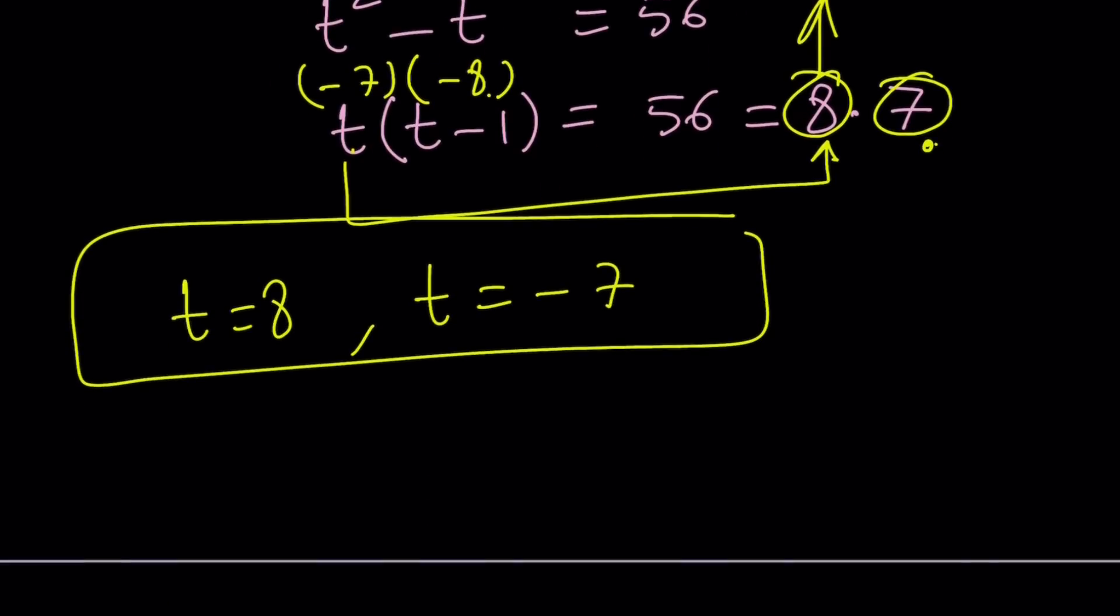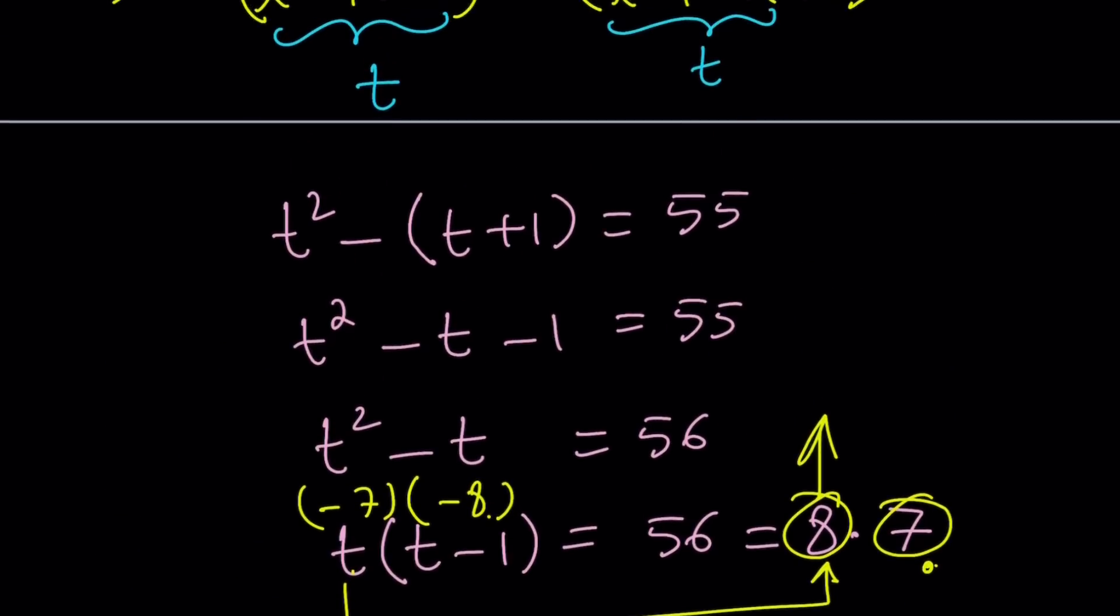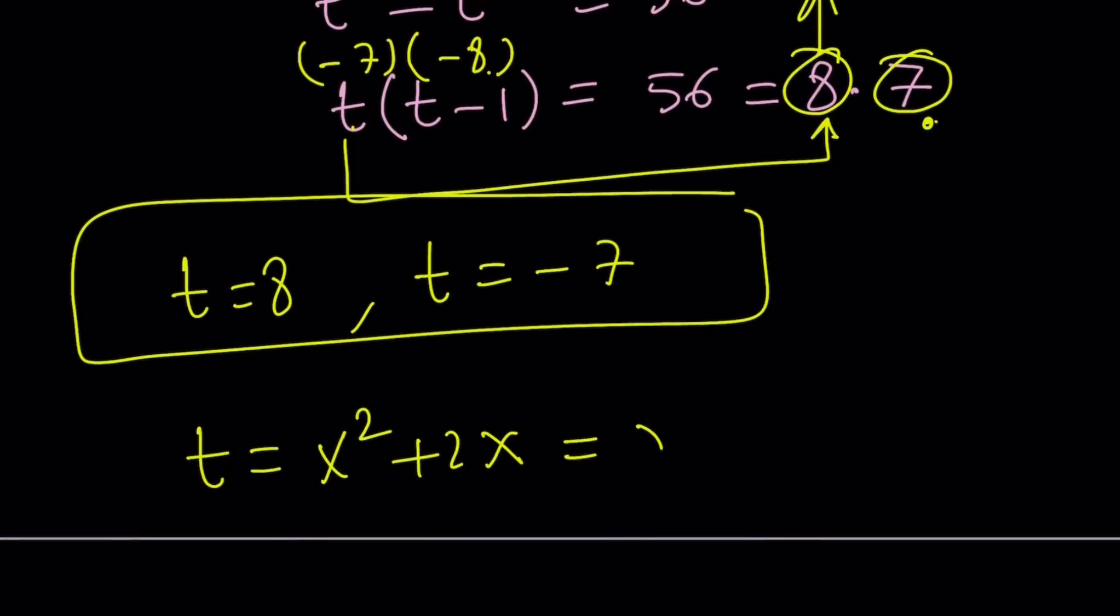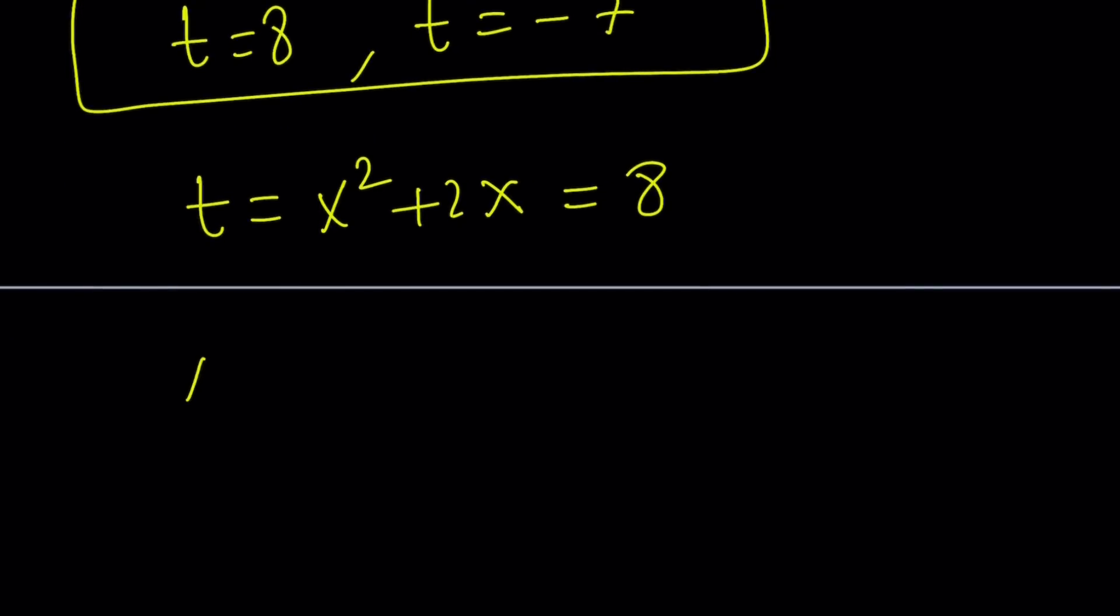So, t is equal to x² + 2x. Right? And it's equal to 8. Let's start with t = 8. So, now this is another quadratic equation. Let's go ahead and solve it. x² + 2x - 8 = 0. You could use the exact same strategy. 2 times 4. Factor out x, so on and so forth. We'll solve it a little differently.